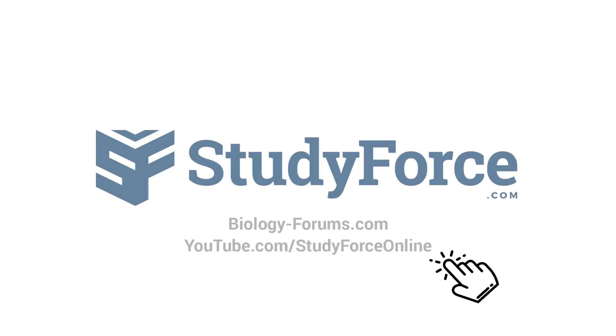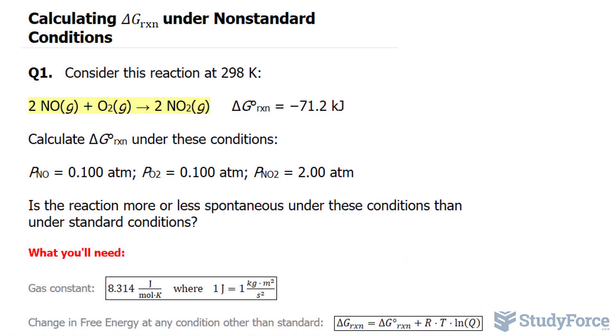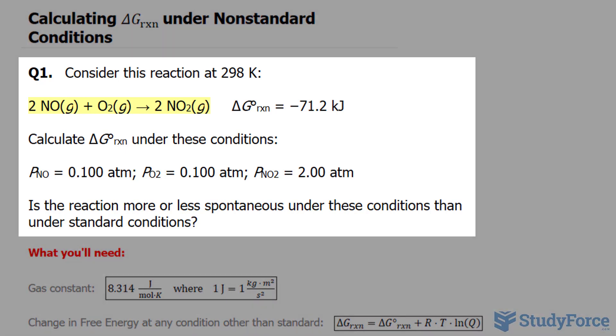In this lesson, I'll show you how to calculate delta G for the reaction under non-standard conditions. The first question reads, consider this reaction at 298 Kelvin.